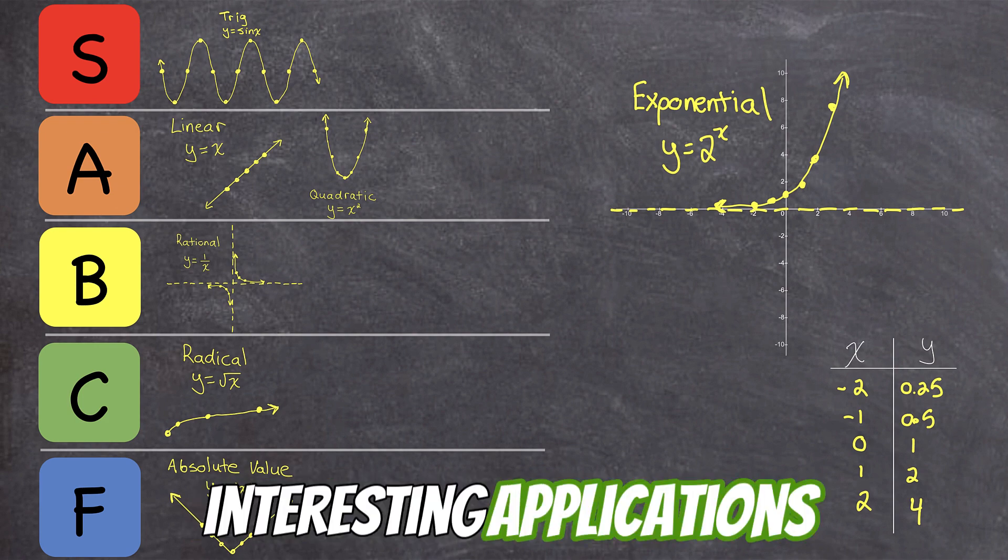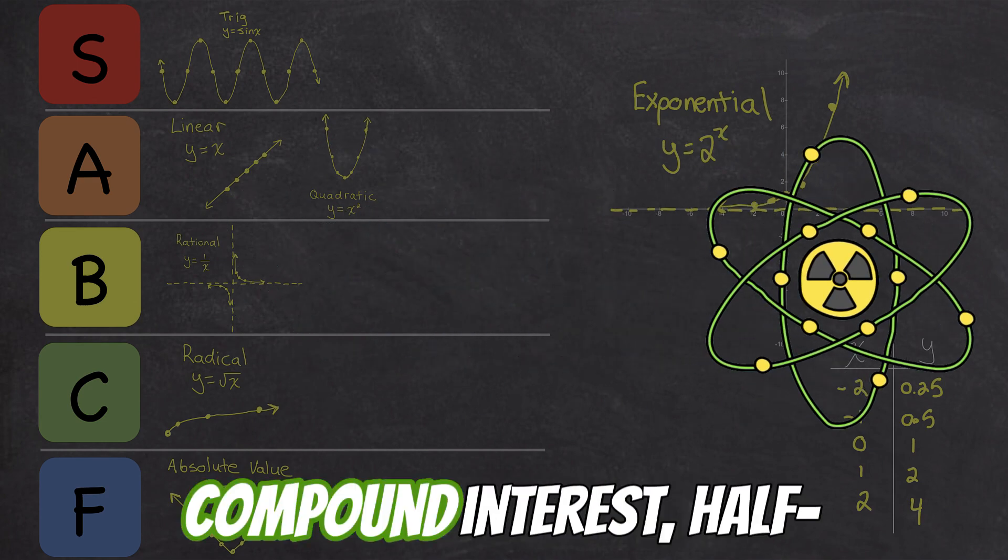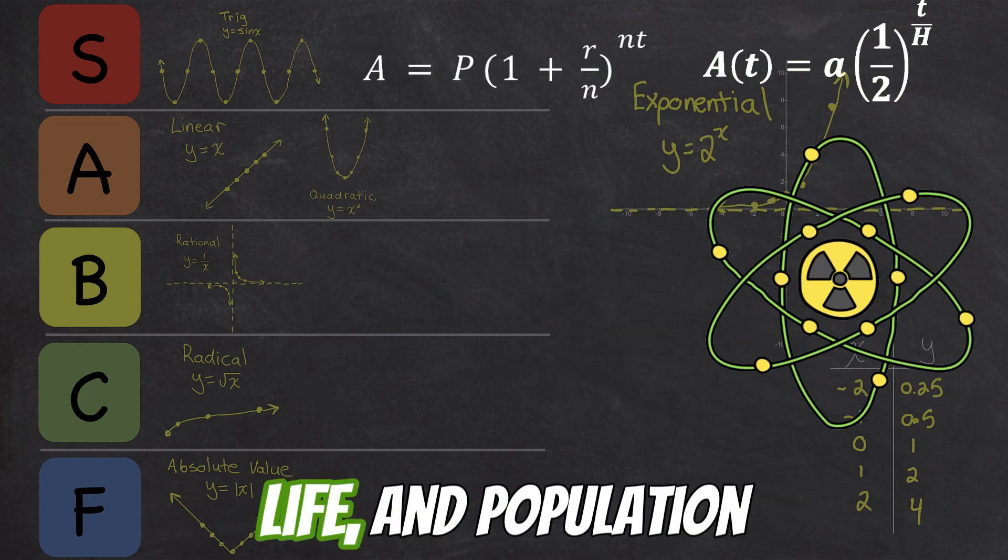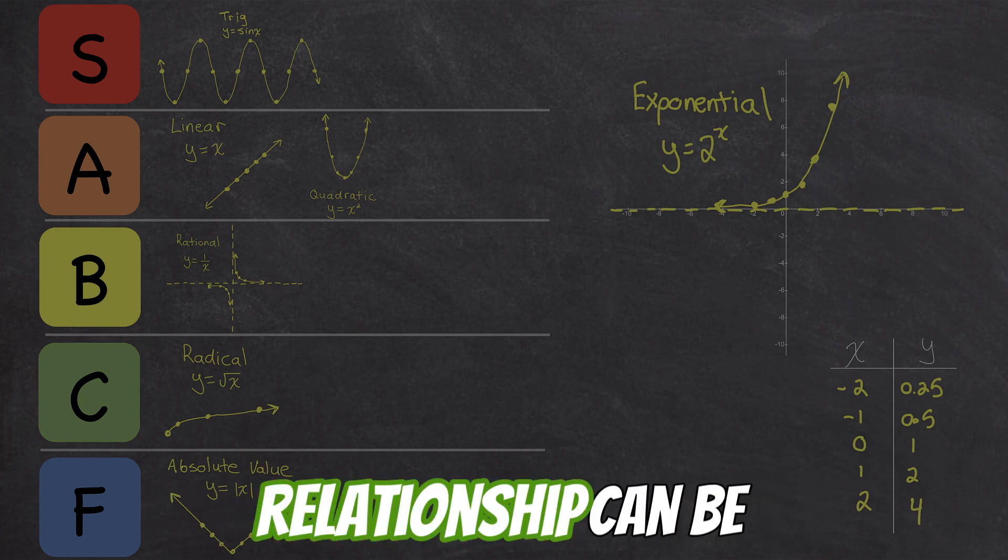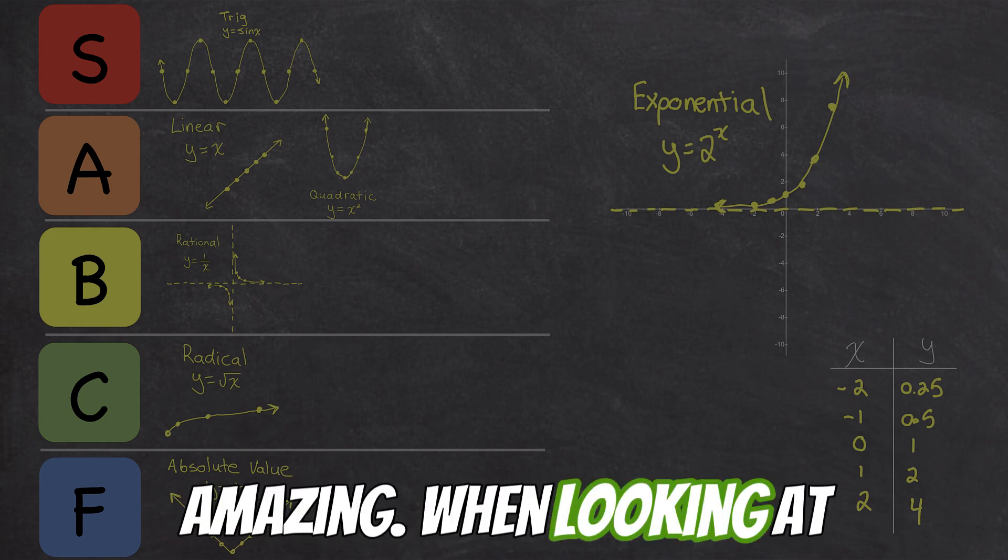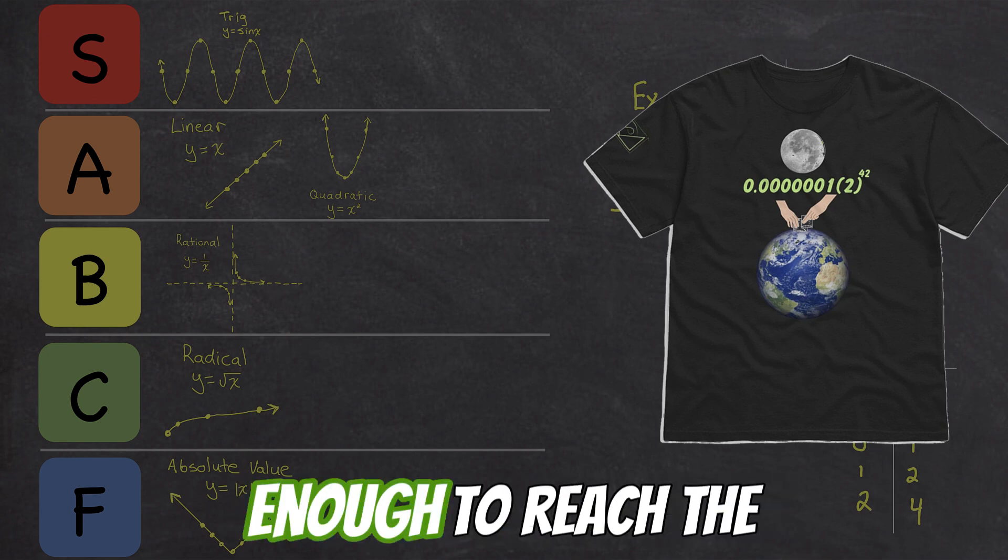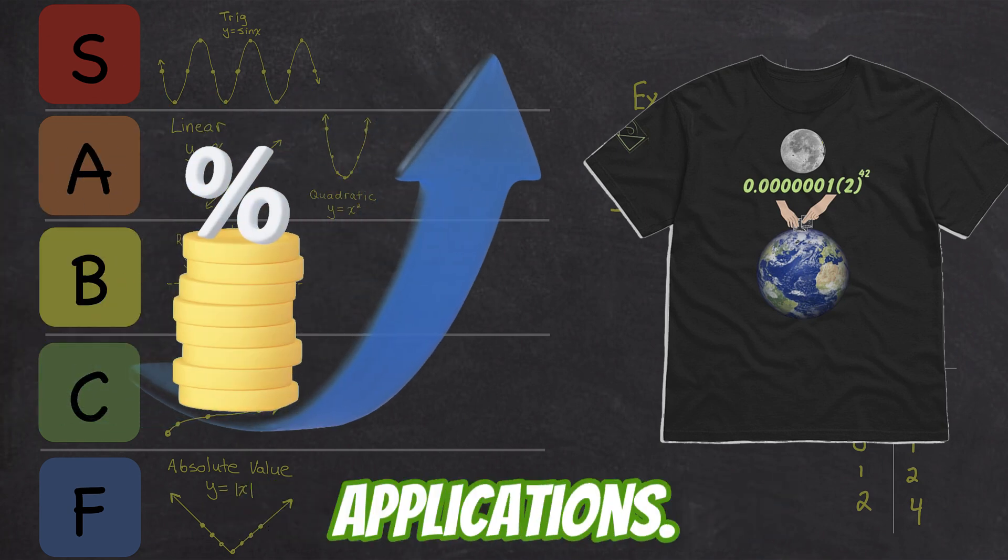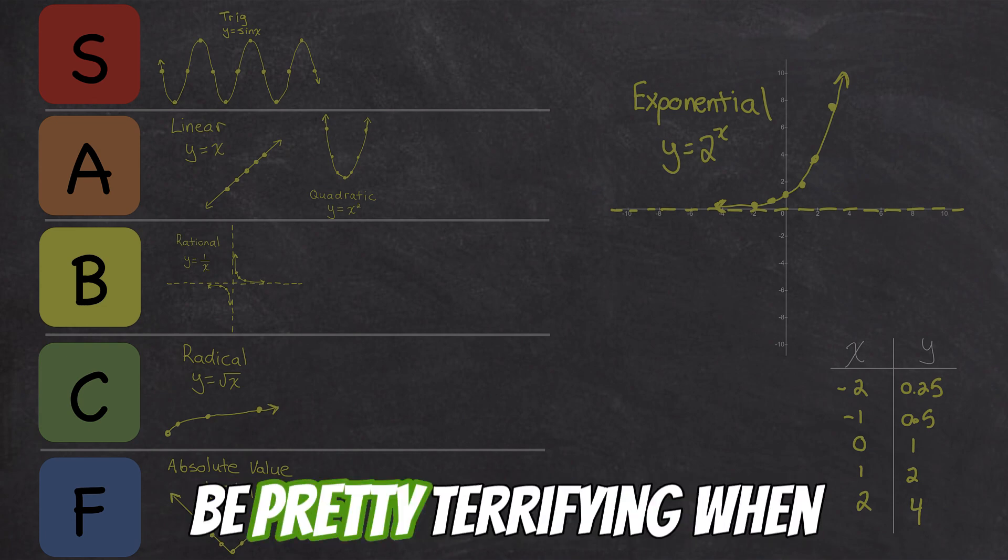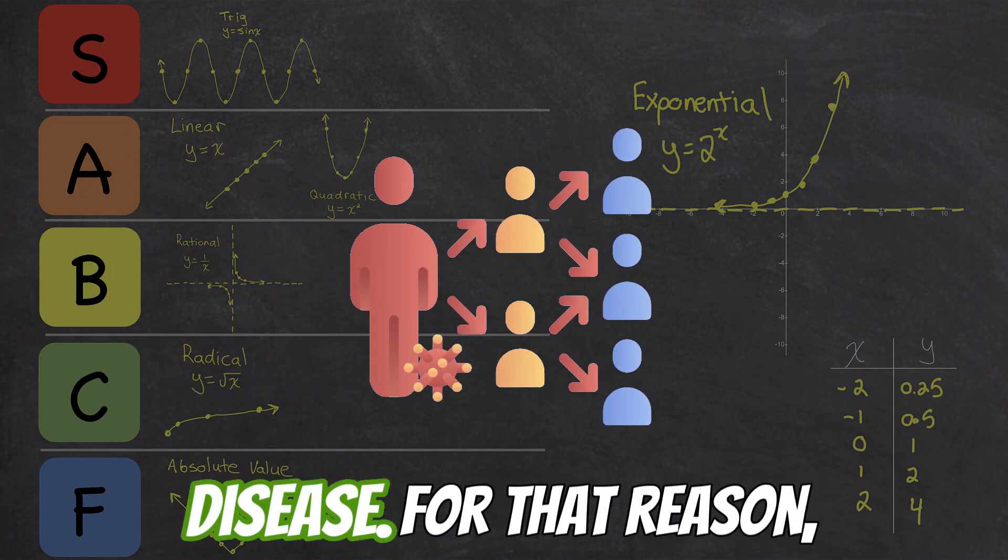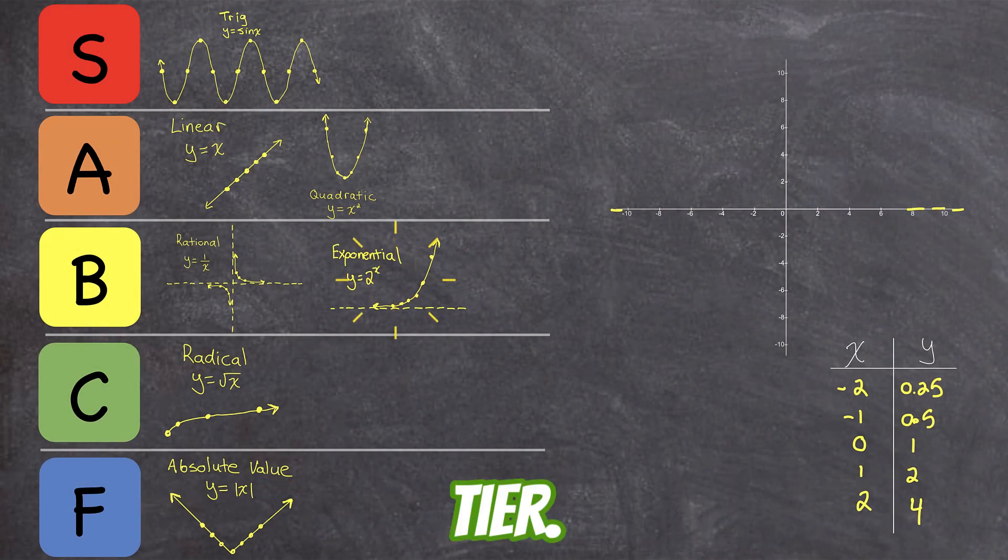There are many interesting applications that involve exponential functions such as radioactive decay, compound interest, half-life, and population growth. The rate of increase in an exponential growth relationship can be amazing when looking at how many times you would have to fold a piece of paper for it to be thick enough to reach the moon, or financial applications. But the rate of increase of exponential growth can be pretty terrifying when looking at the spread of disease. For that reason, this function goes in B-tier.